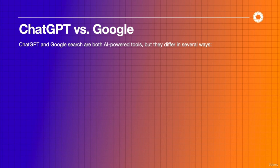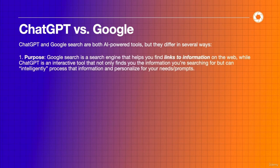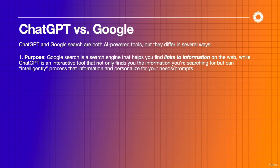Next up we're going to talk about why Google is different from ChatGPT and how it matters for you. They're both AI-powered tools that differ in a few ways. Google's purpose is a search engine that helps you find links to information on the web. ChatGPT, on the other hand, is an interactive tool that not only finds the information you're searching for, but processes it in a way that's personalized for your needs and your prompts.